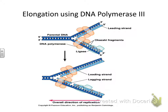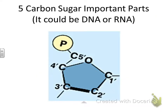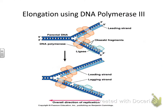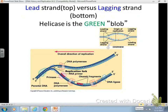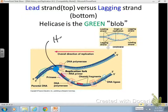The enzyme helicase is the one that actually unzips the DNA. So helicase is the enzyme that unzips the DNA. DNA replication elongation — copying the DNA. DNA helicase is the enzyme that's actually unzipping it. In this picture that purple blob right there would be helicase, and it is unzipping the DNA.